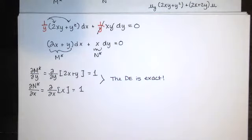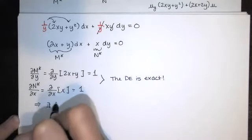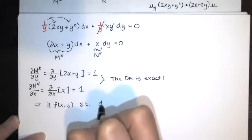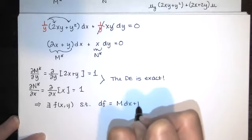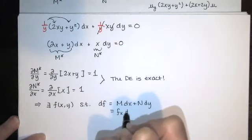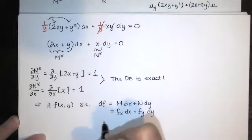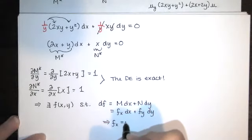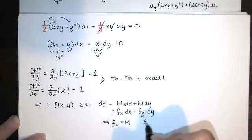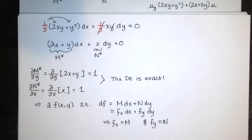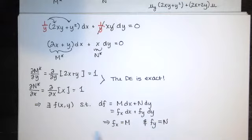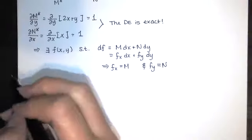Since the equation is exact, there exists a function f(x,y) such that ∂f/∂x = M* = 2x + y and ∂f/∂y = N* = x. To find f, we take partial antiderivatives. The solution of the exact differential equation is a level curve f(x,y) = k of some surface z = f(x,y).